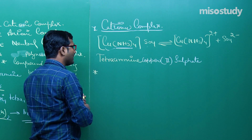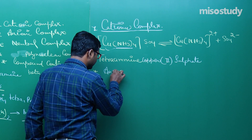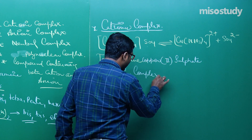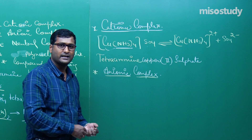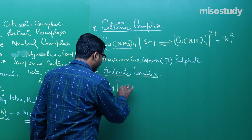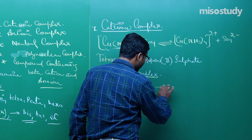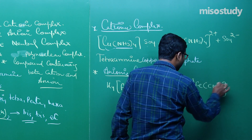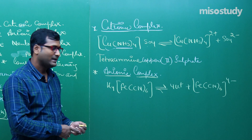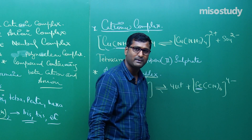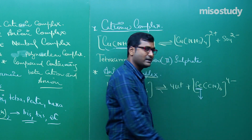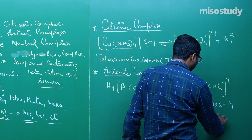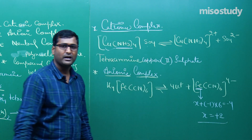In case of anionic complex, if I write K4[Fe(CN)6], it will dissociate as 4K+ and [Fe(CN)6]4-. Find the oxidation state of the central metal atom: x + (-1)×6 = -4, so x = +2. Iron is in +2 oxidation state.